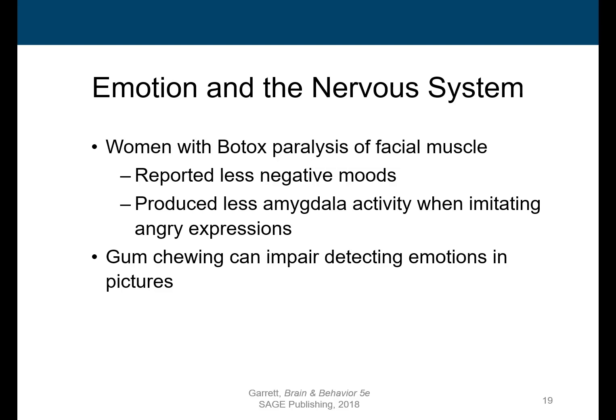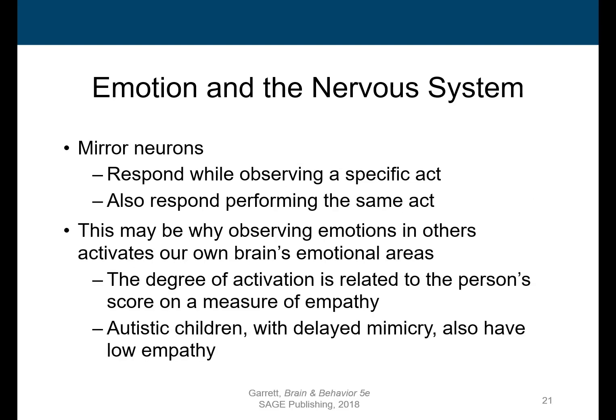Research was done looking at women treated with Botox who are unable to produce the facial expressions of anger. Because they can't make those expressions, they show little activation in the amygdala. Control subjects who did make the facial expression of anger showed much more amygdala activation. Additionally, research has shown that chewing gum can impair detecting emotions in pictures, further demonstrating that facial feedback from our own body helps us interpret our emotions.